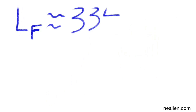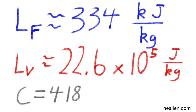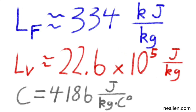A few numbers that are going to be useful. The latent heat of fusion for water is about 334 kilojoules per kilogram, or about 3.34 times 10 to the fifth joules per kilogram. The latent heat of vaporization for water — when water goes from liquid to steam — is 22.6 times 10 to the fifth joules per kilogram. The specific heat of water is 4,186 joules per kilogram times degrees Celsius.